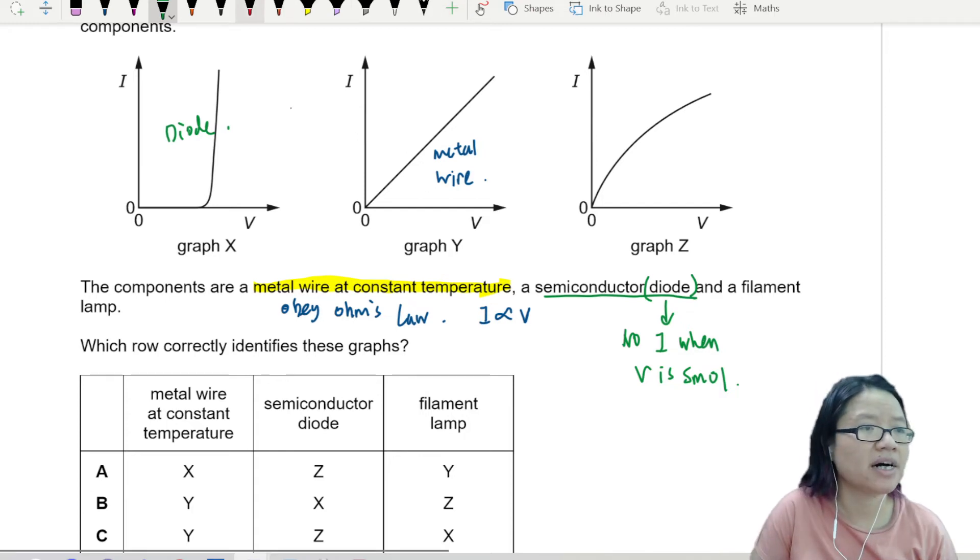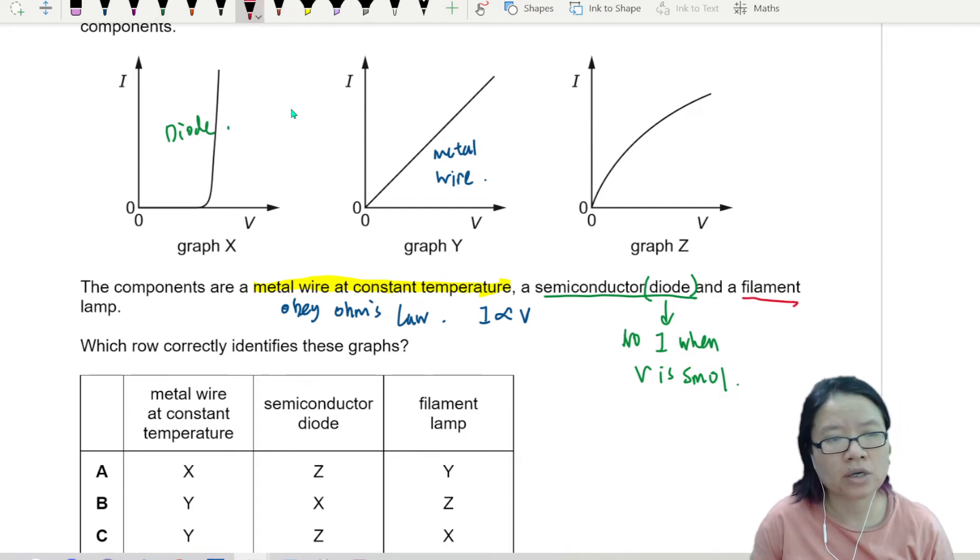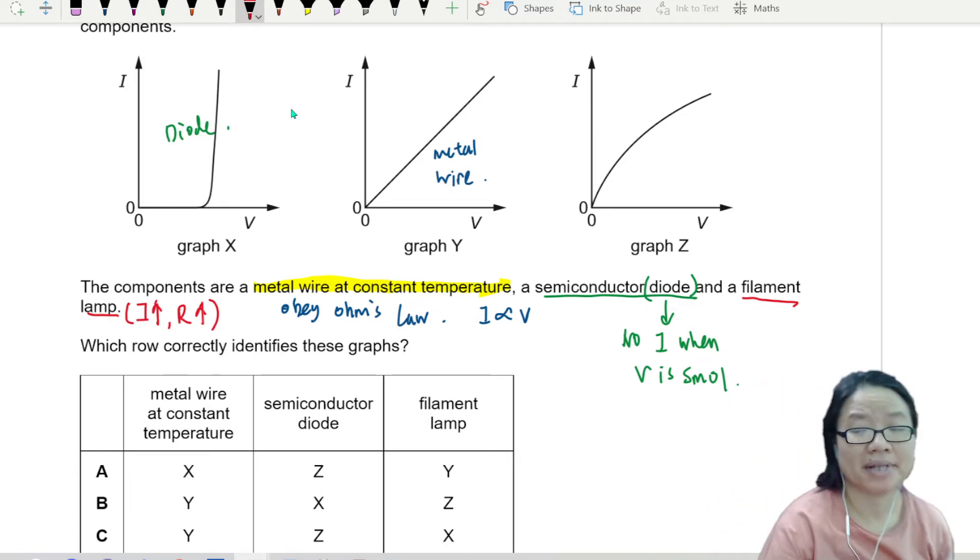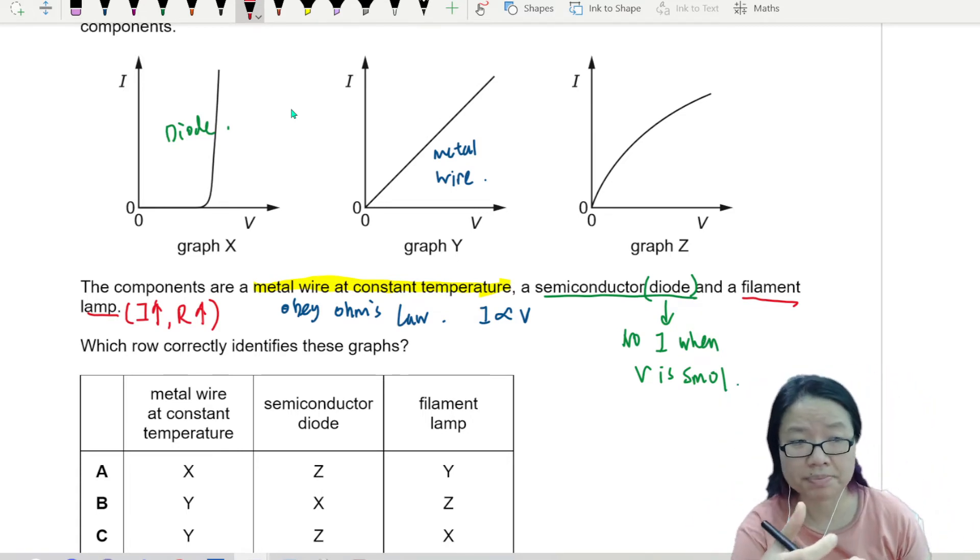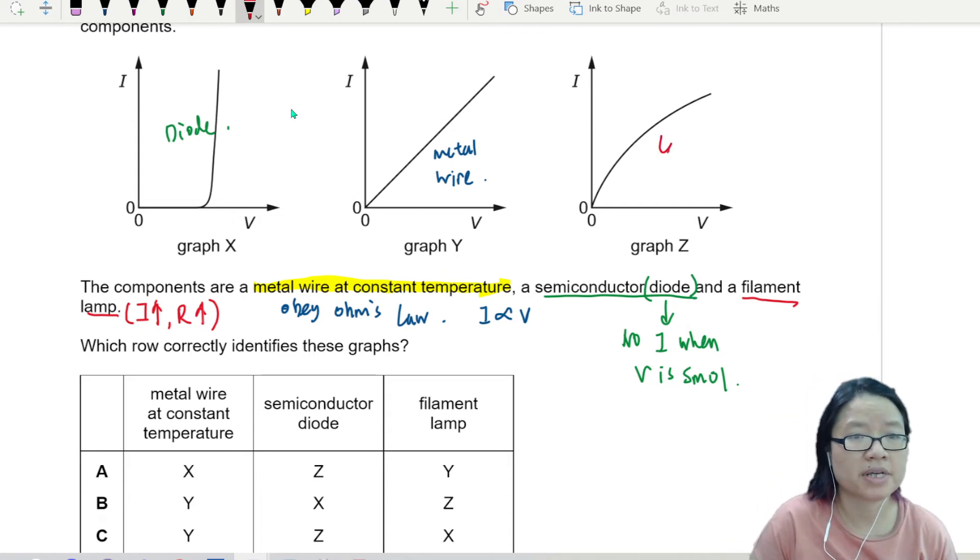And finally, a filament lamp. The characteristic of a filament lamp is when I increases, resistance will increase. A hotter lamp is a lamp with bigger resistance because it's got bigger current. So this one is probably the lamp.